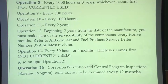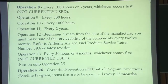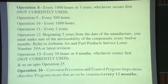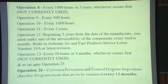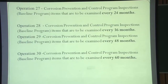From Operation 26 onwards there is a Corrosion Prevention and Control Program, called CPCP inspections. These are to be examined at different frequencies and time intervals — 12 months, 24 months, 36 months, 48 months and 60 months. The component time limits should be checked at each inspection interval to ensure proper overhaul and replacement requirements are accomplished at the specified times.